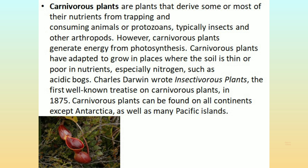Carnivorous plants are plants that derive some or most of their nutrients from trapping and consuming animals or protozoans, typically insects and other arthropods. However, carnivorous plants generate energy from photosynthesis. Carnivorous plants have adapted to grow in places where the soil is thin or poor in nutrients, especially nitrogen, such as acidic bogs.